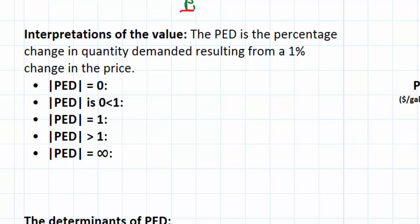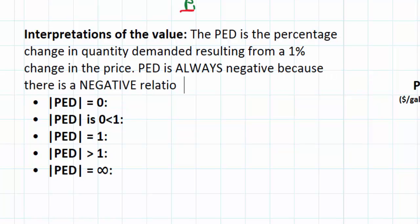The negative sign tells us, in fact we should put a note here, PED is always negative because there is a negative relationship between price and quantity demanded. So that's a given. PED is always going to be negative. What we want to do is interpret the value. So to do that we can drop the negative sign.